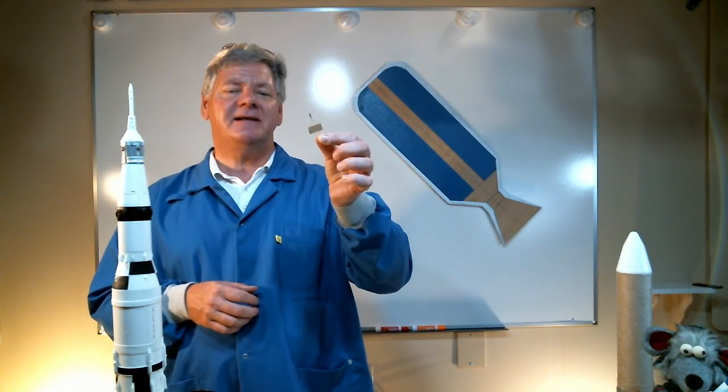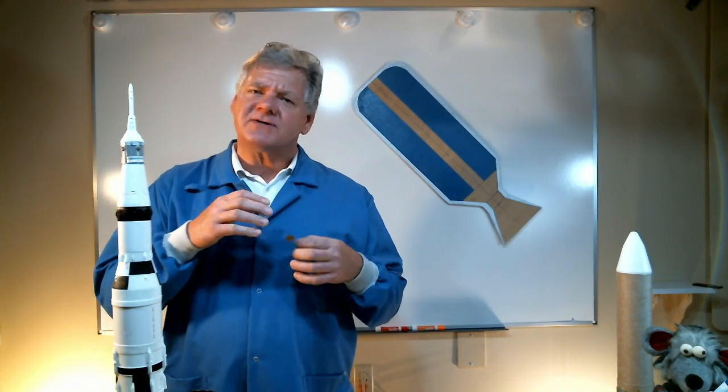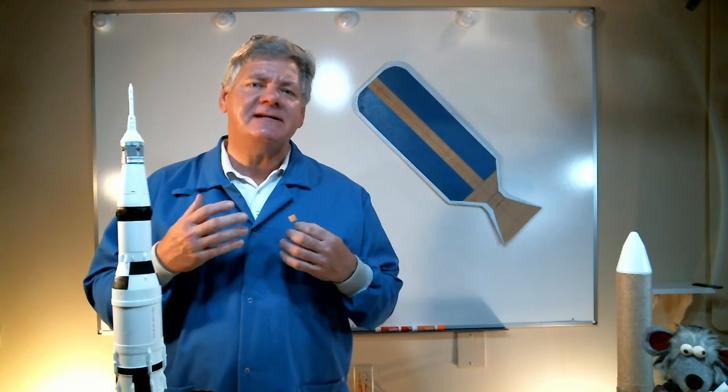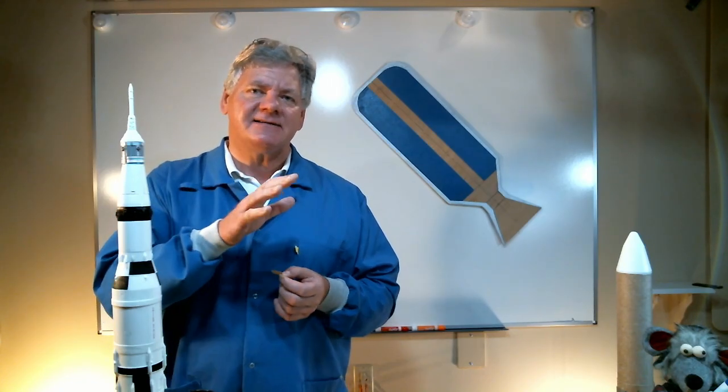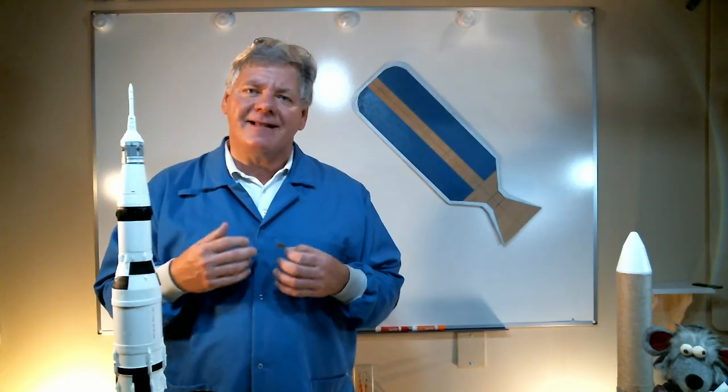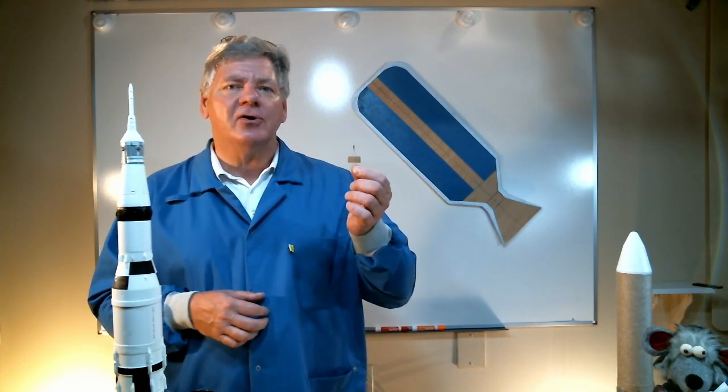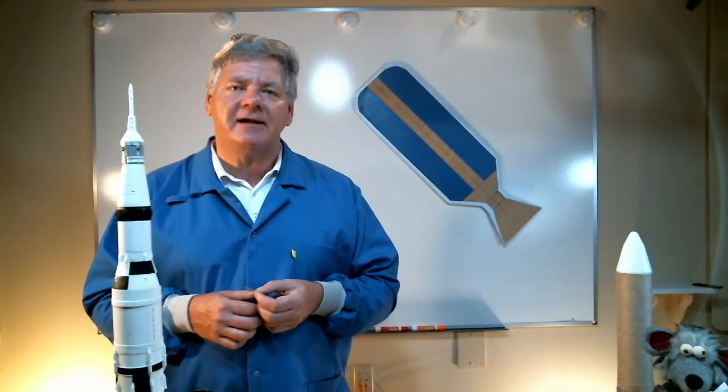Now let's take a look at a model rocket igniter. I have one right here in my hand. You can probably barely see it. Now this igniter works almost the same way as a bigger NASA sounding rocket motor igniter, except a NASA igniter produces a lot more heat and pressure to ignite a much larger rocket motor. So now let's take a look at an experiment to see how a model rocket igniter works.